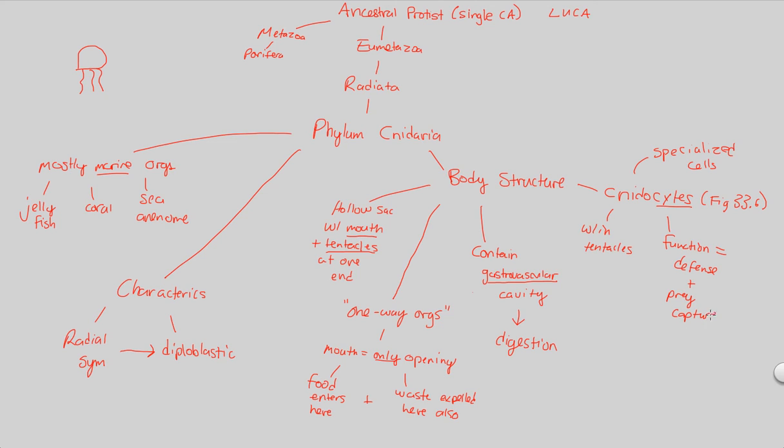Defense plus prey capture. Why do they have to do this? Well, this is because they might get eaten by other animals because animals are heterotrophic. Or they need to eat. They need to capture prey because they themselves are heterotrophic. Key characteristic of all animals. And that's phylum cnidaria. Basic facts to remember about this: definitely understand the idea of radial symmetry, meaning that they're definitely diploblastic, and these basic body structures, specifically the specialization that they exhibit in the form of cnidocytes.